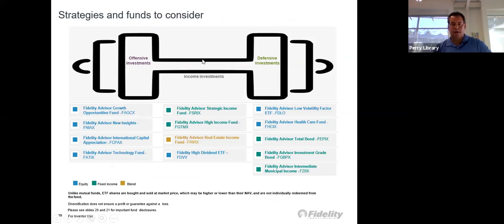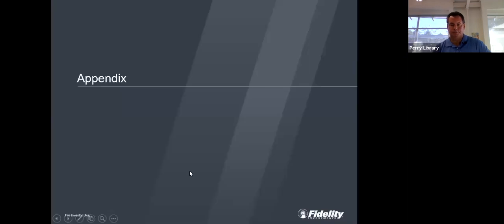Strategies to consider: We have offensive investments, which would be growth opportunities, new insights with a growth fund. We have international capital appreciation, and technology has done well through this. Income investments would be strategic income, which is made up of bonds, high income which is high yield bonds, real estate income, and high dividends. Defensive would be low volatility, which are bonds. Health care would do well. Total return bonds would do well. And municipal income would do well.